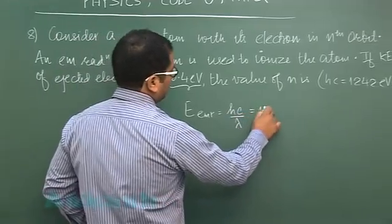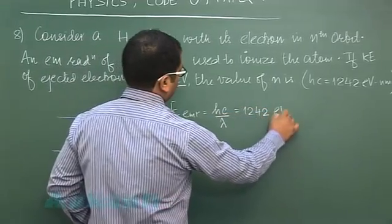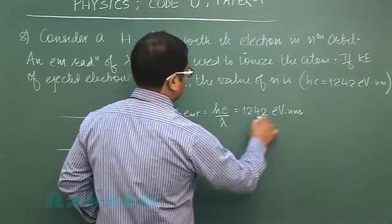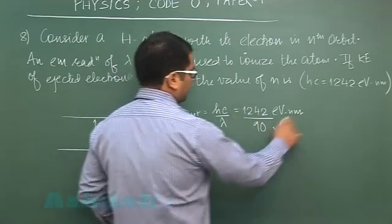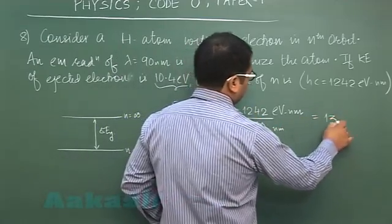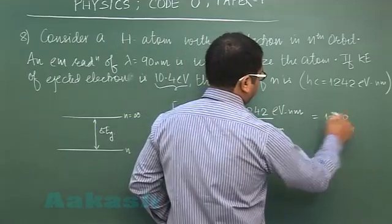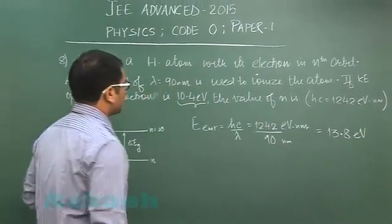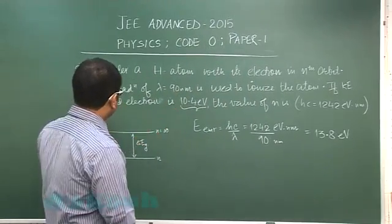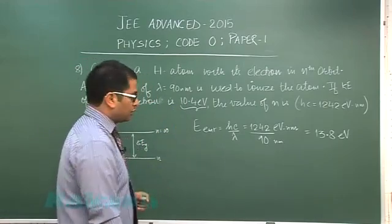hc for convenience has been given as 1242 electron volt nanometer, and the wavelength is 90 nanometers. So this comes out to be a simple calculation of 13.8 electron volts. And now the kinetic energy of the ejected electron is 10.4 electron volts.